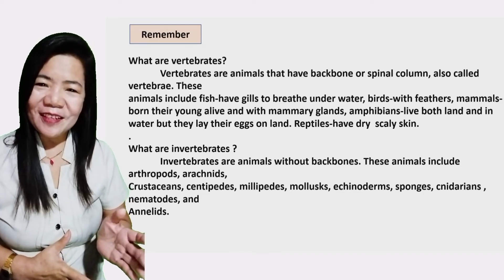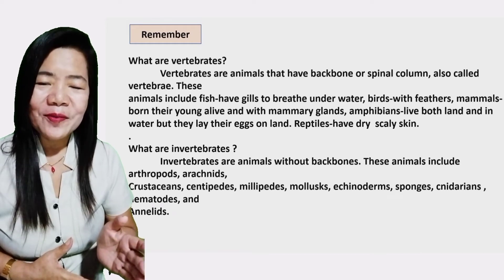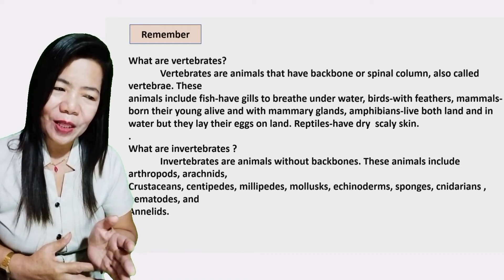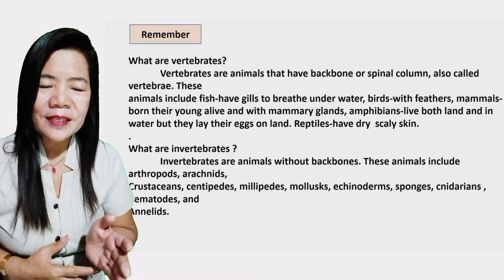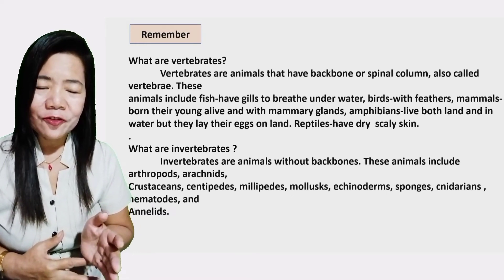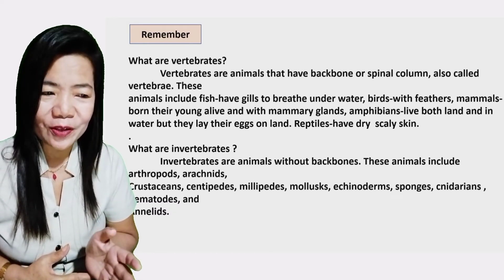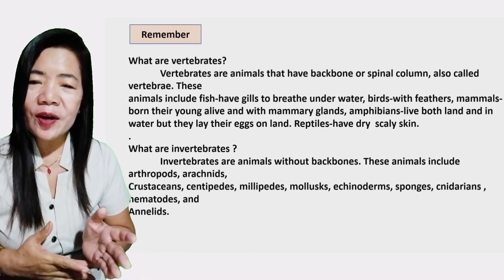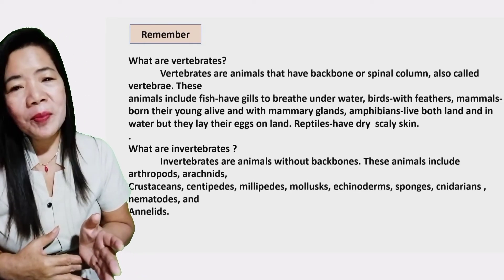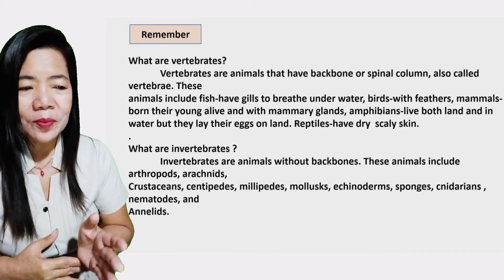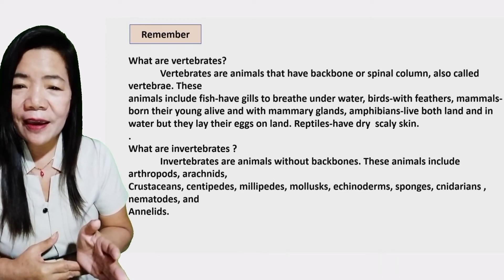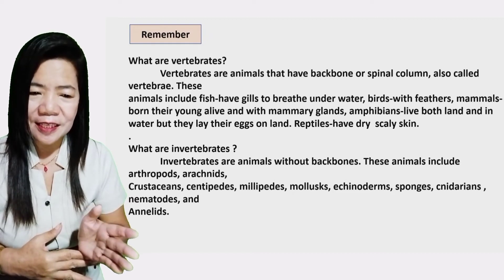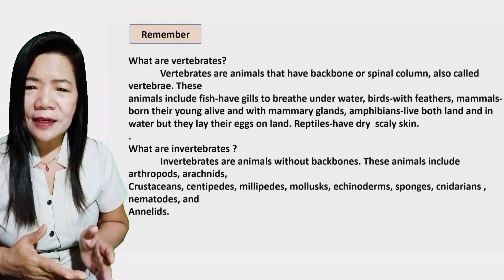Hello, children! Remember this. What are vertebrates? Vertebrates are animals that have backbones or a spinal column, also called vertebrae. These animals include fish, which have gills to breathe underwater; birds with feathers; mammals, which are born alive and have mammary glands; amphibians, which live both on land and in water but lay their eggs on land; and reptiles, which have dry, scaly skin.